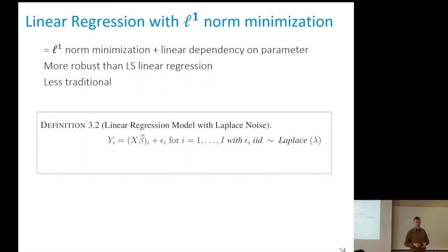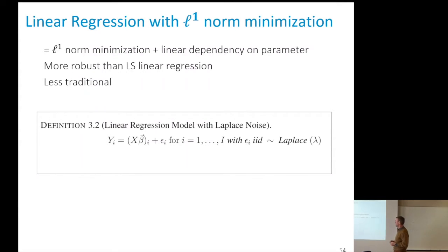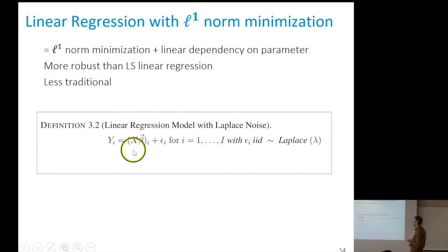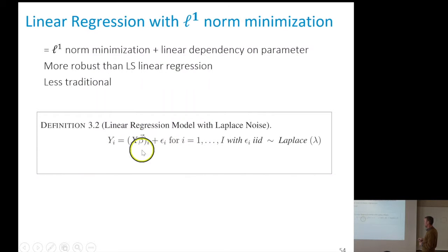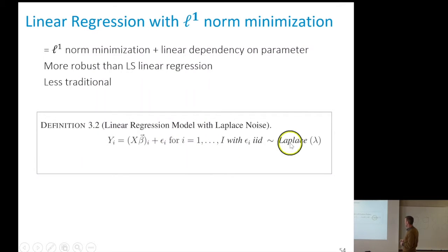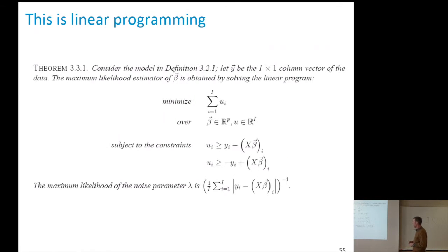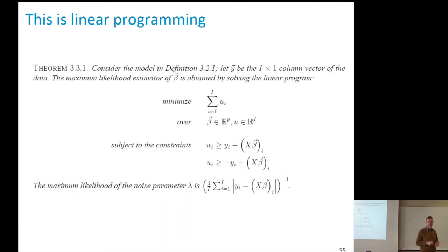We can also do linear regression with L1 minimization, but not in closed form. When we minimize the sum of absolute values of the errors, the technical solutions are different. The model is the same except we assume Laplace noise, and the dependency on the parameter is linear.